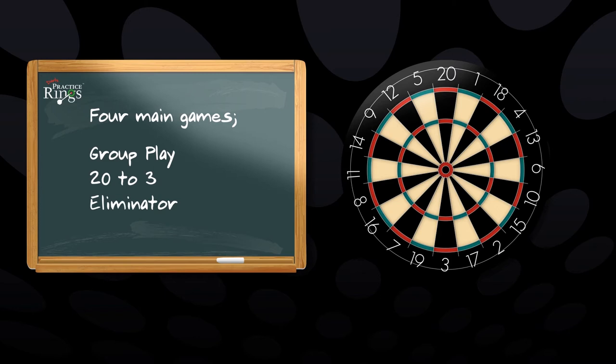There are four main games contained within this pack. Game 1 is called Group Play. Game 2 is called 20 to 3. Game 3 is called Eliminator. And Game 4 is Killer Rings.